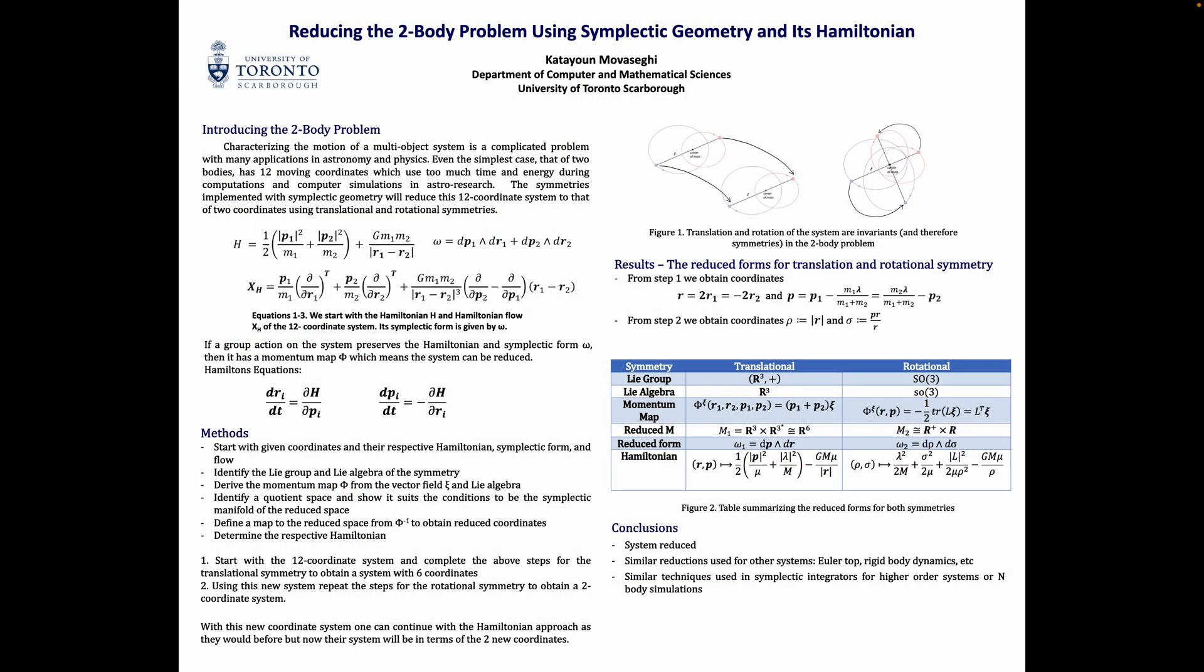This is a poster by Katiyoon Moveseggi when they were a master's student at the University of Toronto-Scarborough. Here they're using the two-body central force problem as an example of how symmetries, in particular the Hamiltonian formalism, can lead to reduced dimensionality. Keep this in mind as we'll be returning to these ideas in a later video.